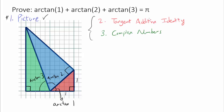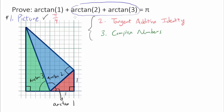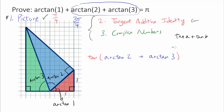These two additional methods are also educational and informative. For method two, let's start by realizing that arc tangent of 1 is easy to evaluate — we know it equals 45 degrees or pi over 4. So all we need to show is that arc tangent of 2 plus arc tangent of 3 equals 3 pi over 4, so that pi over 4 plus 3 pi over 4 equals pi. We evaluate arc tangent of 2 plus arc tangent of 3 by taking the tangent of the entire sum using the tangent addition identity.